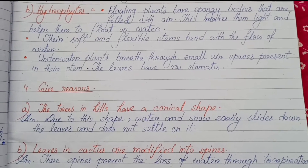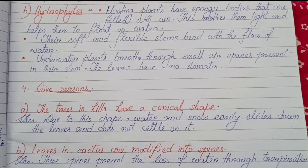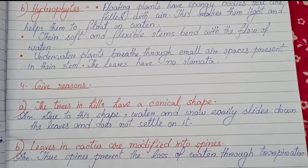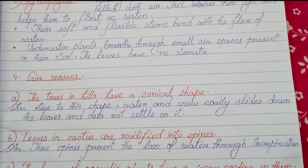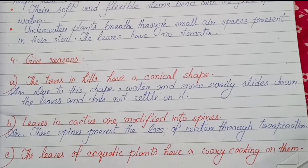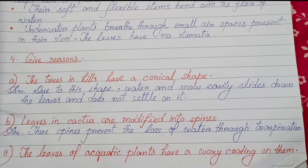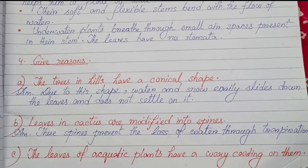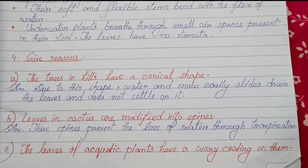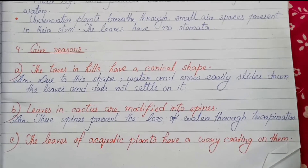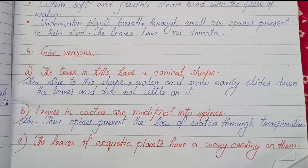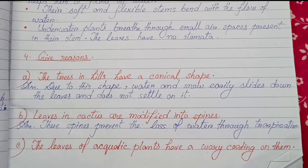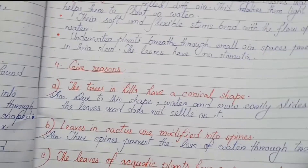Give reasons. A: the trees in hills have a conical shape. Due to this shape, water and snow easily slide down the leaves and do not settle on them. B: leaves in cactus are modified into spines. These spines prevent the loss of water through transpiration.